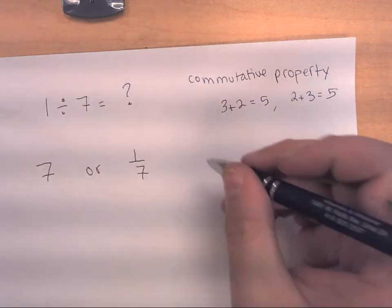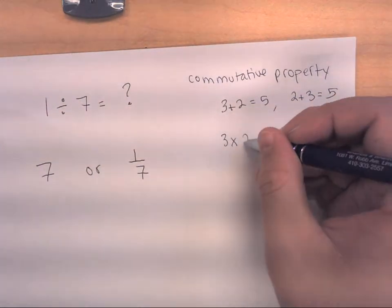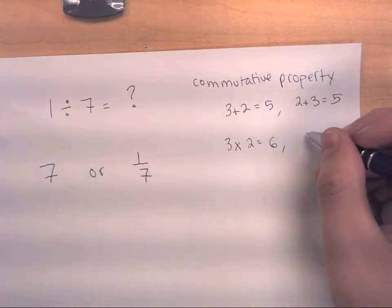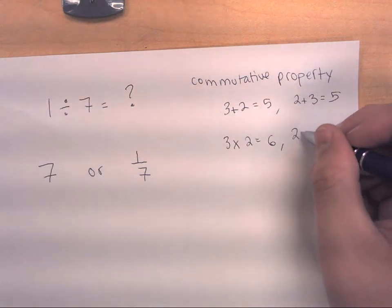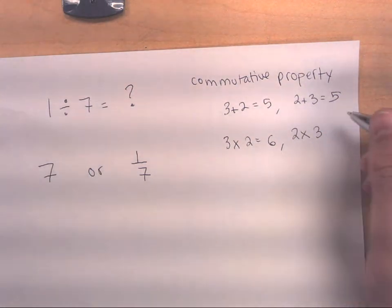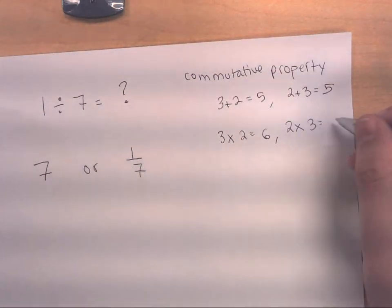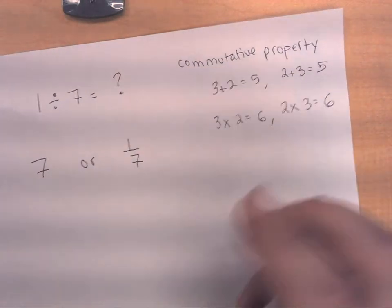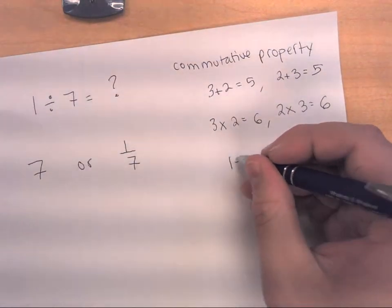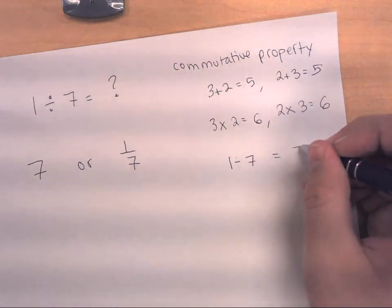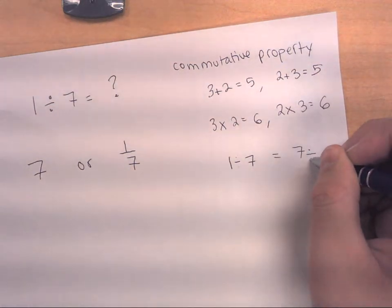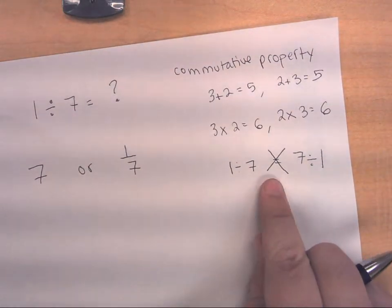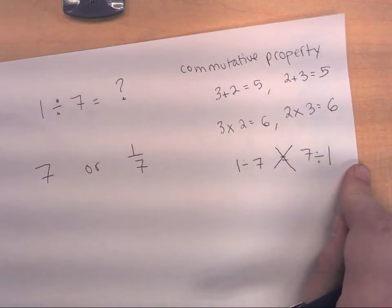With multiplication it works the same way. If I have the factors three and two, I get the product six. If I flip-flop the order and put two first, I still get six. The commutative property does not work with division — we cannot say one divided by seven is equivalent to seven divided by one.